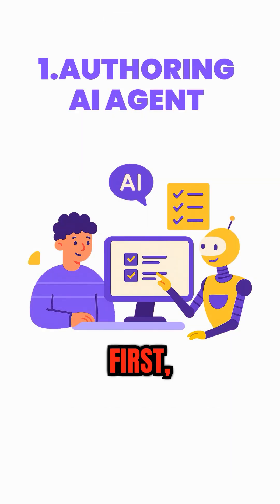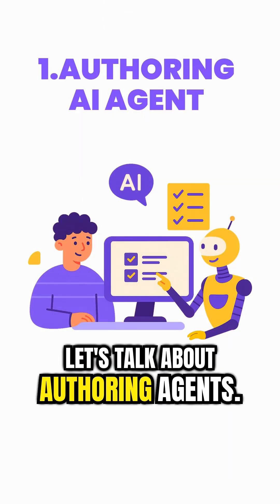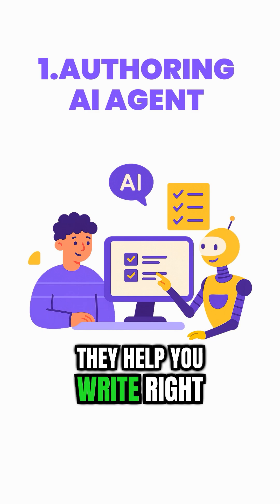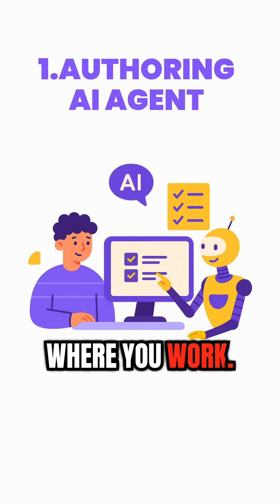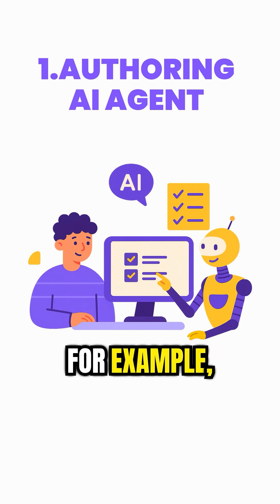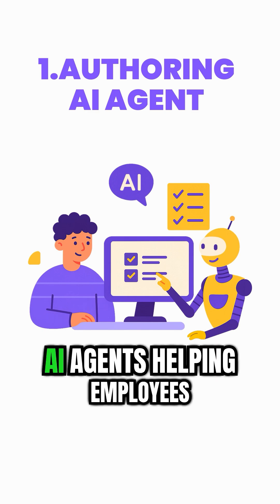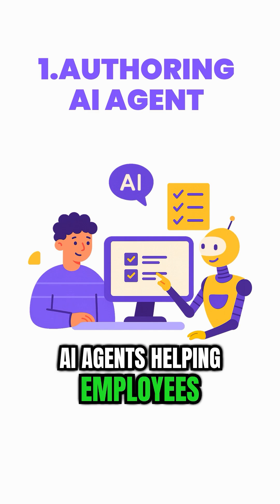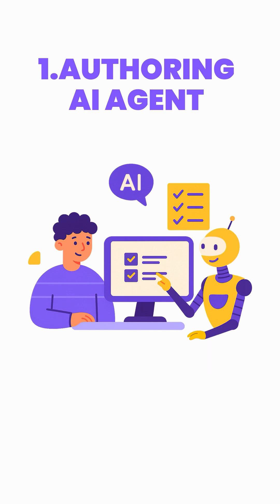First, let's talk about Authoring Agents. They help you write right where you work. For example, AI agents help employees draft their goals within seconds.